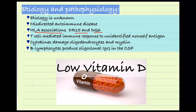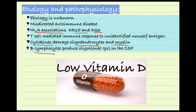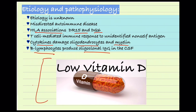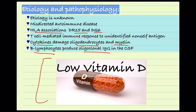The etiology is not well known, but there is a strong association with HLA-DR15 and DQ6. T cells release cytokines which damage oligodendrocytes and myelin. There is also a role of B lymphocytes, which produce oligoclonal IgG in the CSF — we use this for testing oligoclonal bands in CSF findings. There is also a sunlight and vitamin D association; populations with low vitamin D are at higher risk of getting multiple sclerosis.